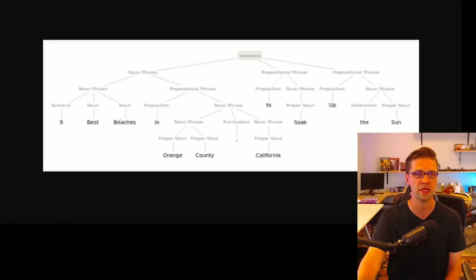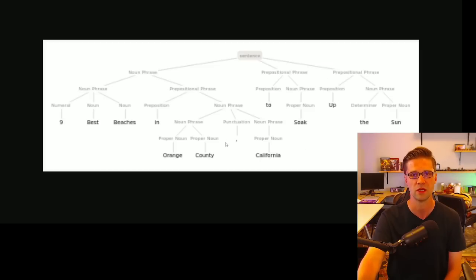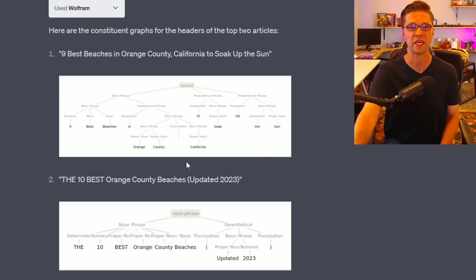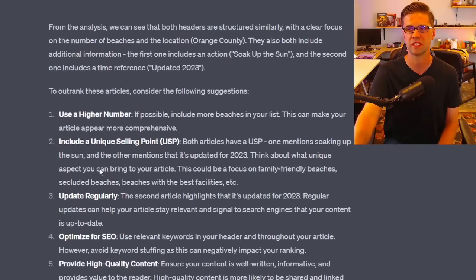It took the title 'The 9 Best Beaches in Orange County, California to Soak Up the Sun' and broke it down scientifically — noun phrases, prepositional phrases, all of it. This is what Wolfram is really good at, because n-grams are how ChatGPT and these models work; it's how Google sees the internet. If we understand these fine details, we can rank higher.